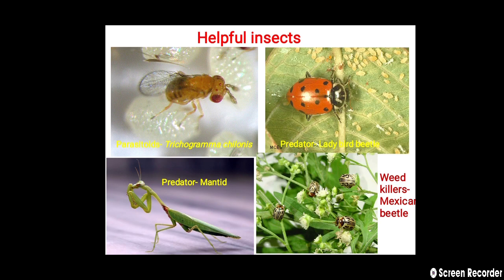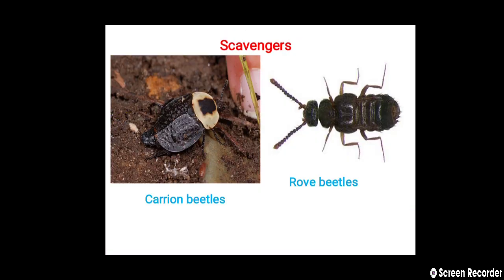The weed killer shown is the Mexican beetle — Zygogramma bicolorata — which feeds on its host Parthenium hysterophorus, the congress weed. Different scavengers include carrion beetles and rove beetles.